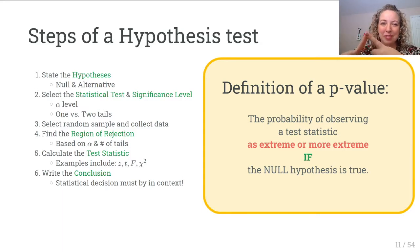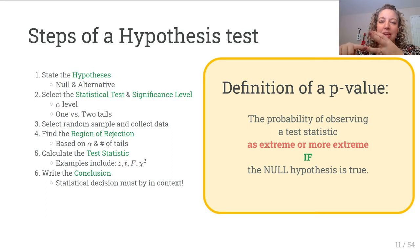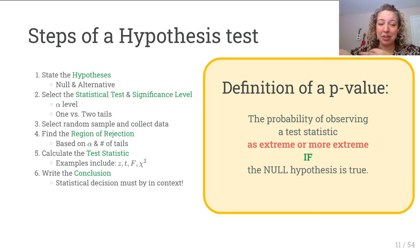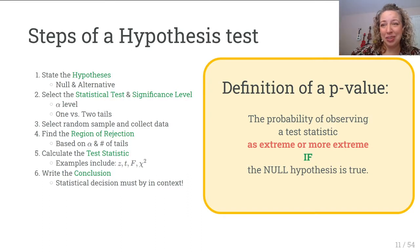Step one is the null and alternative hypothesis. Step two is choosing your test and significance level, which includes alpha, the significance level, and how many tails. Step three is gathering your data, a random sample. Step four is finding the rejection regions based on alpha and the number of tests and the type of test. Step five is calculating that test statistic, and step six is writing your conclusion.